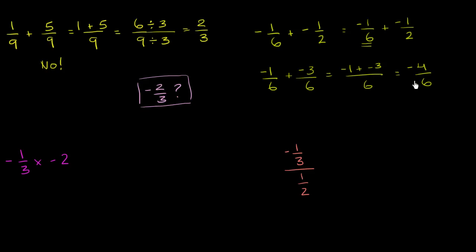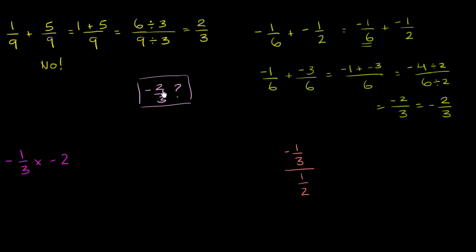Let's see if we can simplify. Both 4 and 6 are divisible by 2, so let's divide them both by 2. In the numerator, negative 4 divided by 2 is negative 2, and 6 divided by 2 is 3. Negative 2 divided by 3 is the same thing as negative 2 thirds, which is exactly our goal value. So yes, this expression in green is equal to negative 2 thirds.